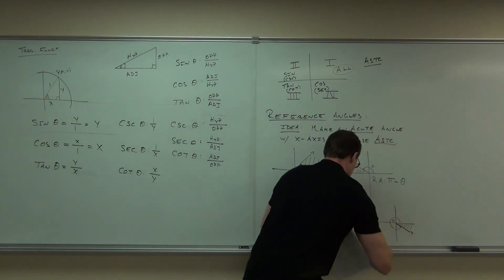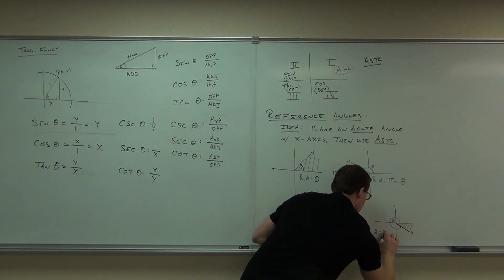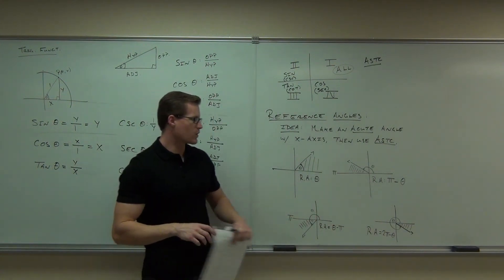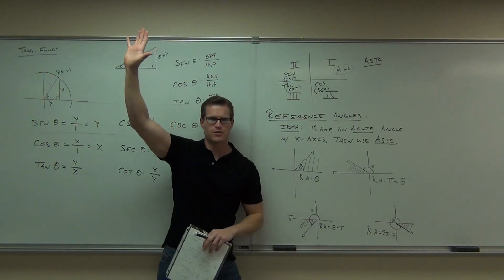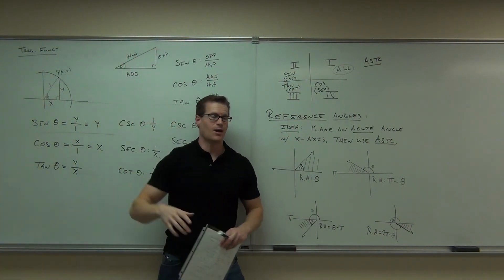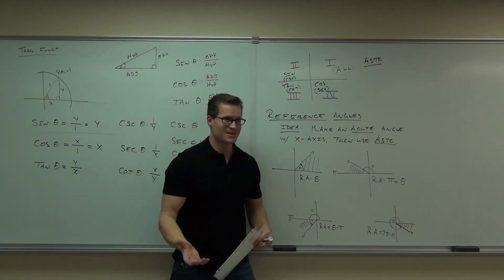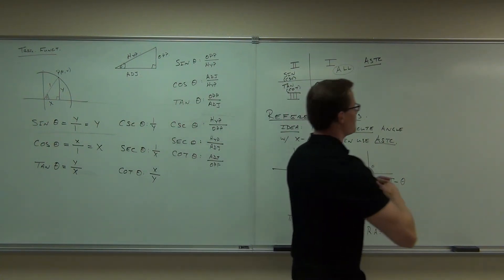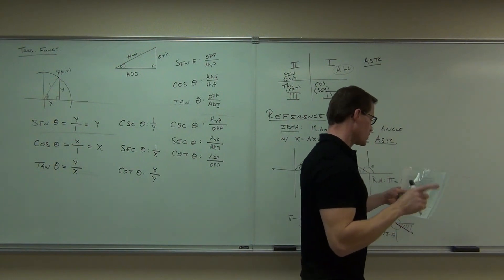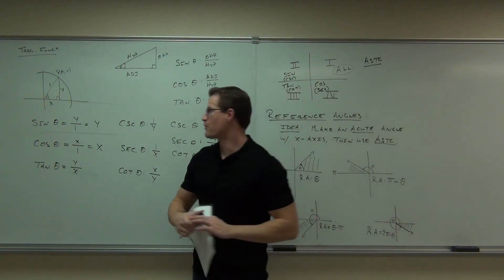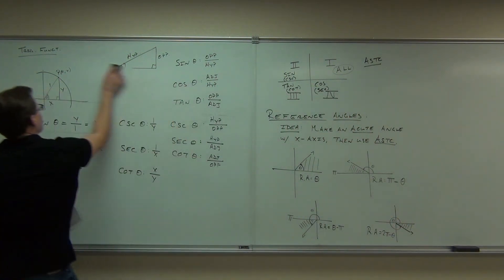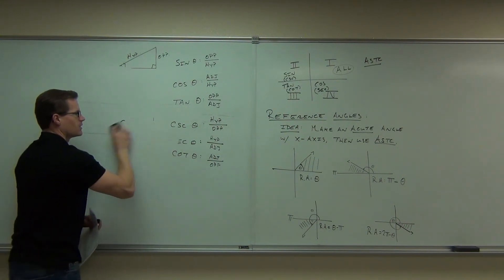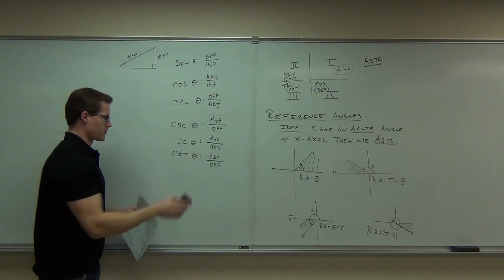So, reference angle in the fourth quadrant is 2 pi minus theta. Now that you're okay with where the reference angle idea comes from, let's see how to actually use it. Say I wanted you to find sine, cosine, tangent, secant, cosecant, and cotangent of 5 pi over 3.